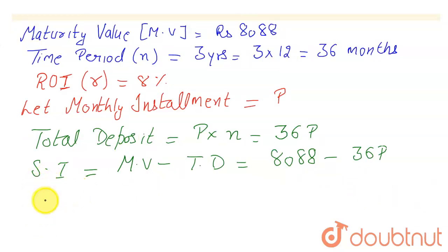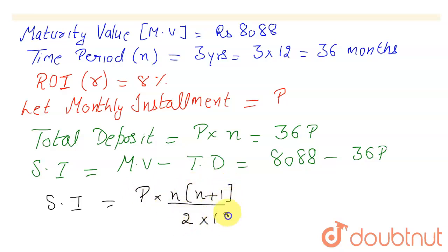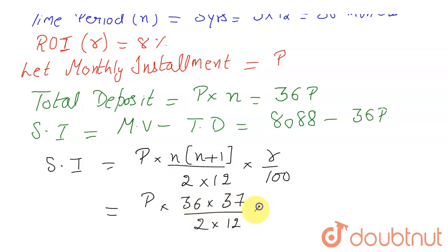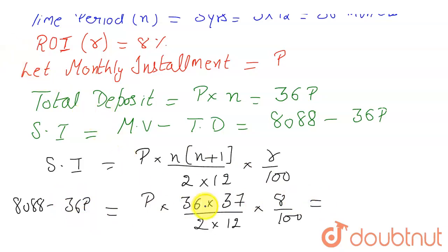The formula for simple interest in RD is: SI = P × n × (n + 1) / (2 × 12) × r / 100. Here P is the monthly installment, n = 36 months, so n + 1 = 37, and r = 8%. Substituting, we get: 8088 − 36P = P × 36 × 37 / (2 × 12) × 8 / 100.